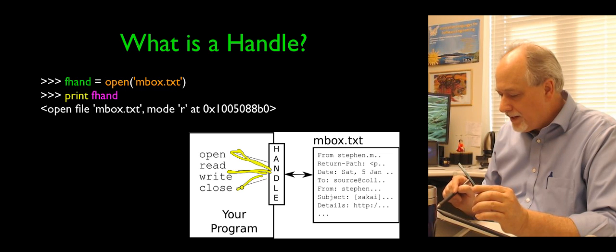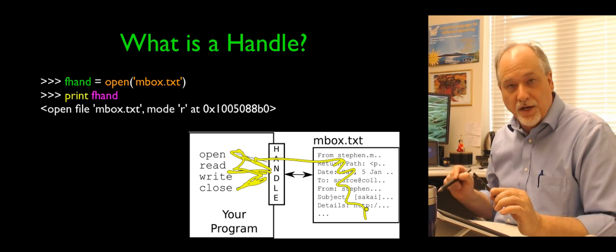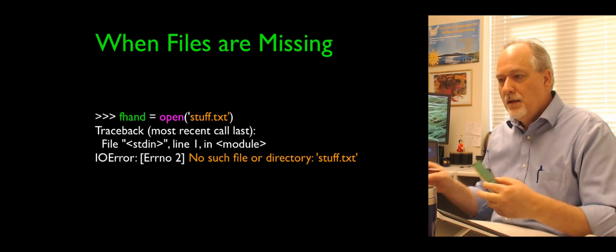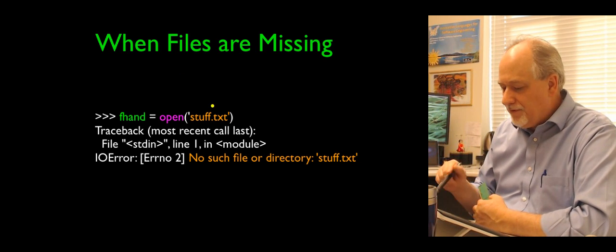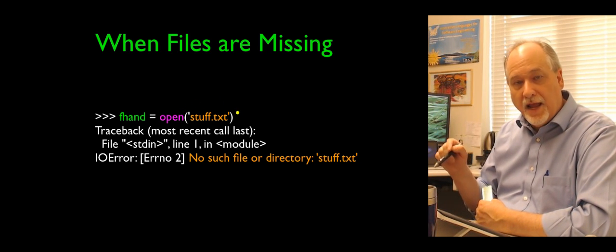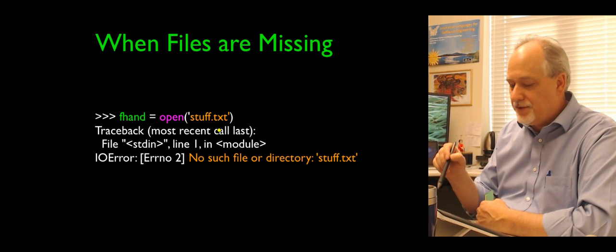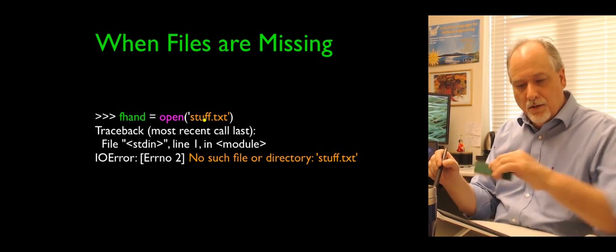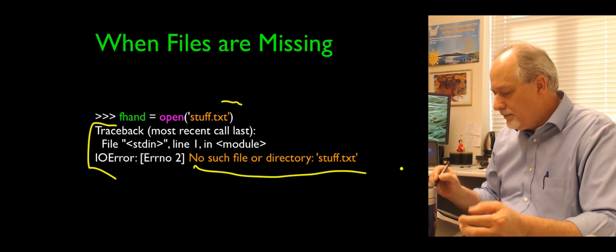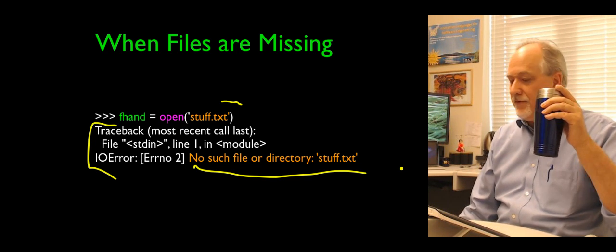We do operations on the handle — open, close, read, write — and through the handle it reads or changes what's on the disk. The handle is the thing that connects, not the data itself. If you attempt to open a file, the file needs to be in the same folder as your Python code. If the file isn't there, you get a traceback: 'No such file or directory: stuff.txt' — meaning you forgot to save it or typed the name wrong.